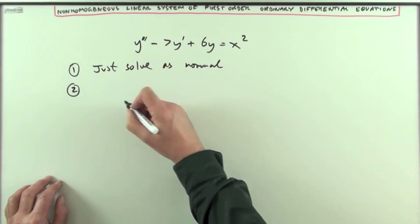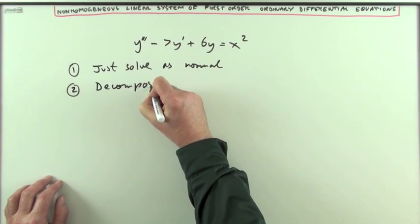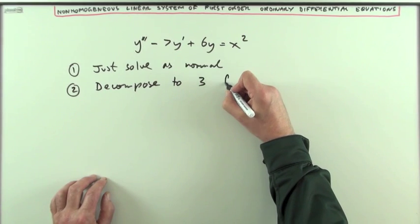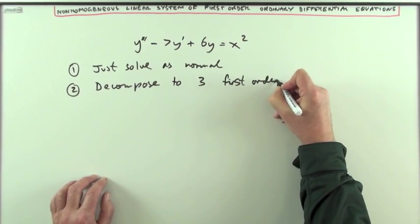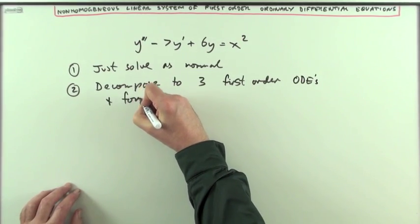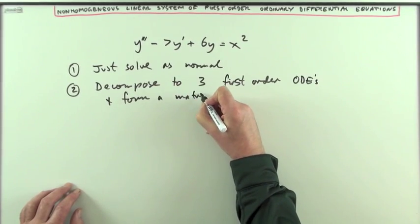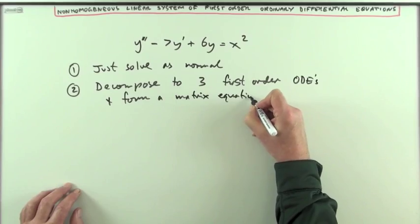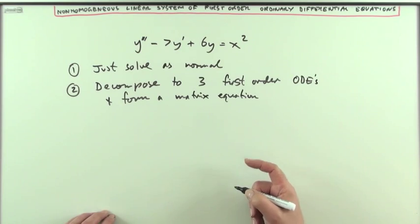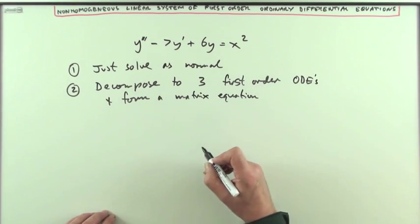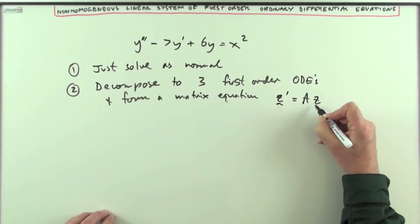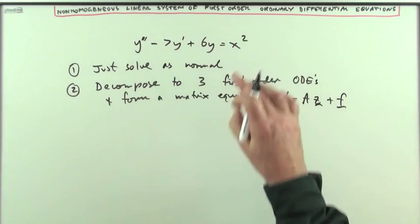Secondly, I'm going to decompose and form a matrix equation. That'll be the second video. In this decomposition I'll no longer be using y as the function—I'll be splitting into three separate ones which will be z's. So I'm going to form a matrix equation: z dashed equals A z plus some vector just of x at the end.